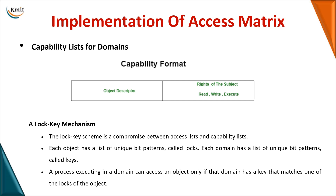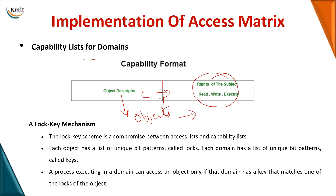The next way of implementing the access matrix is the capability list. The capability list is maintained in a two-field format: the first field is related to your object, describing what type of object it is, and the second describes what operations can be performed on that particular object. The capability list is maintained per domain in this particular way.